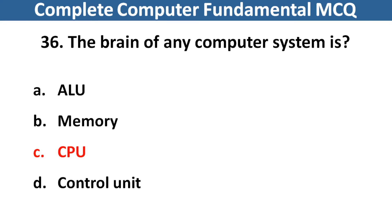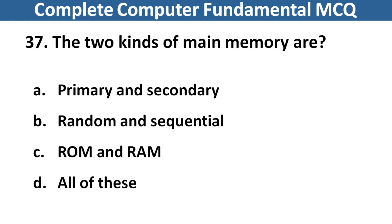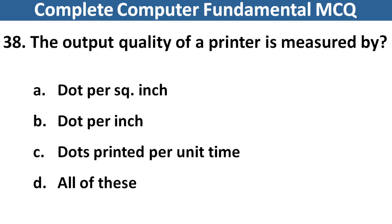The brain of any computer system is? Right answer is option C, CPU. Next question: The two kinds of main memory are? Right answer is option C, ROM and RAM.